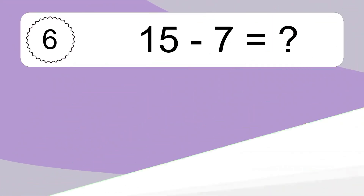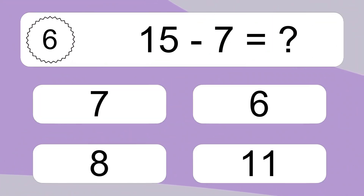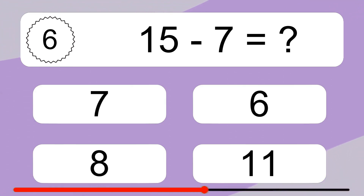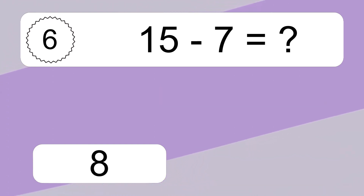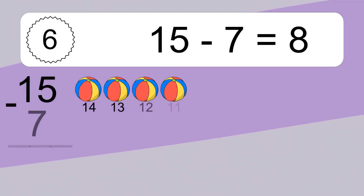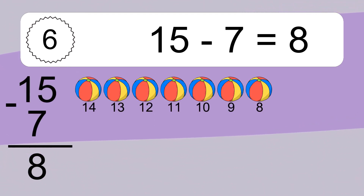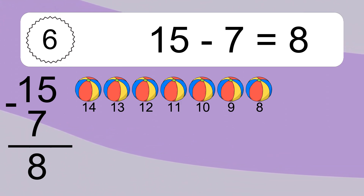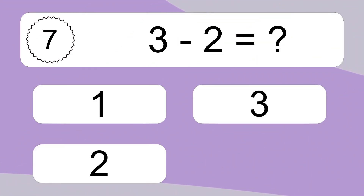15 minus 7 equals what? 15 minus 7 equals 8. Let's count it: 14, 13, 12, 11, 10, 9, 8. 15 minus 7 equals 8.